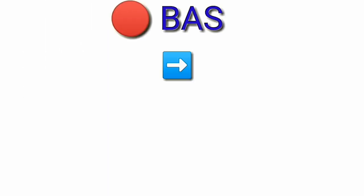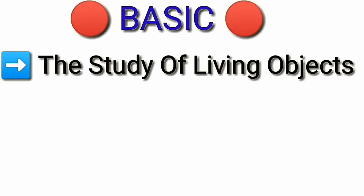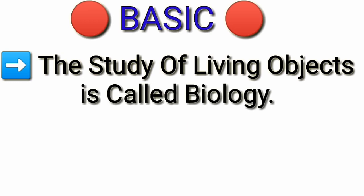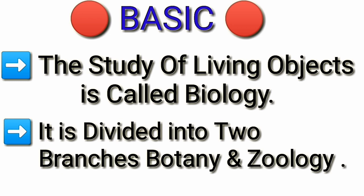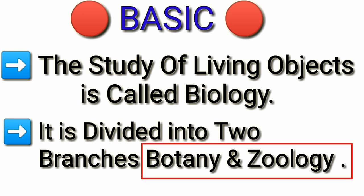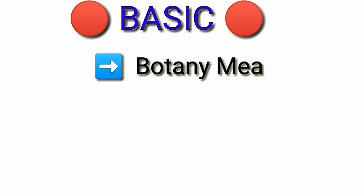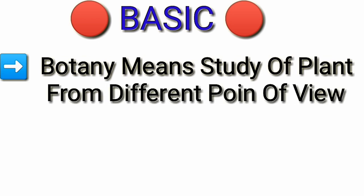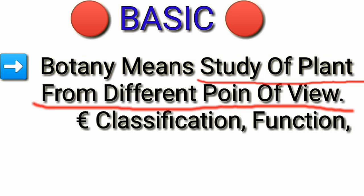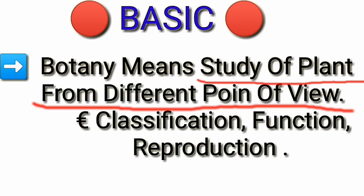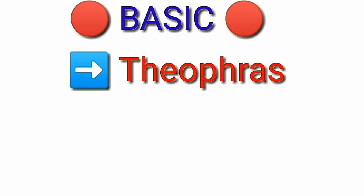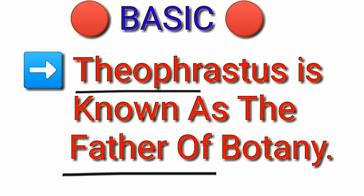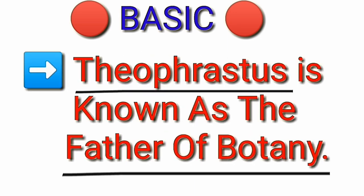The study of living objects is called biology. Biology is divided into two branches: botany and zoology. Botany means the study of plants from different points of view, for example their classifications, functions, and reproductions. Theophrastus is known as the father of botany.